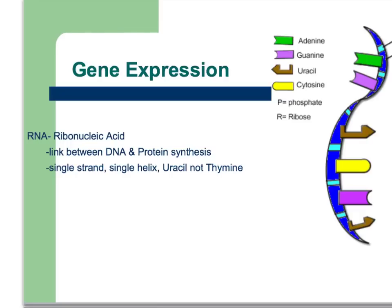RNA — ribonucleic acid — is just like DNA in terms of what its composition is, but its structure is a little bit different. It's only single-stranded, unlike the double-stranded DNA — in other words, a single helix. The big difference is it doesn't use thymine; it uses uracil. So it still uses GC, but instead of A's going with T's like in DNA, A's pair with U. And remember, it's always complementary.